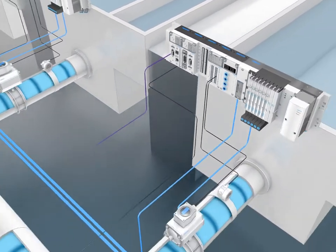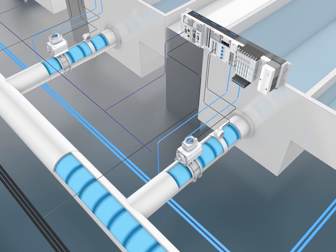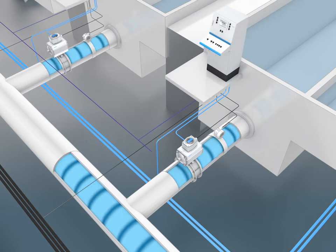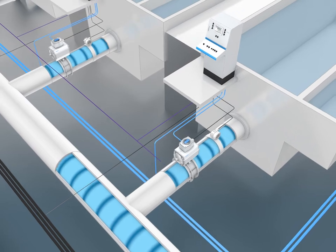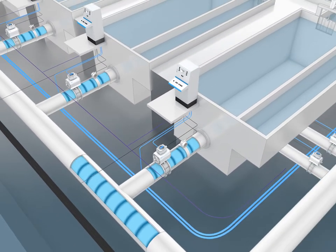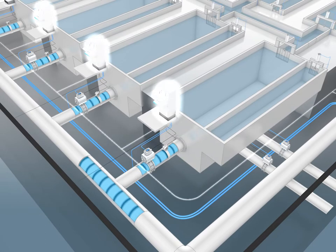You can operate each filter unit in the decentralized control cabinet, which is also where the local system diagnostics take place. Each control cabinet communicates with the process control system via a field bus cable.